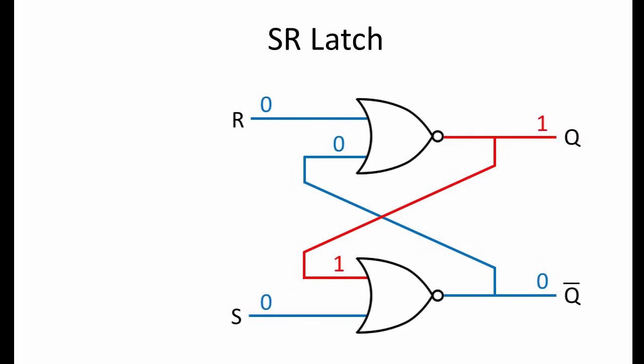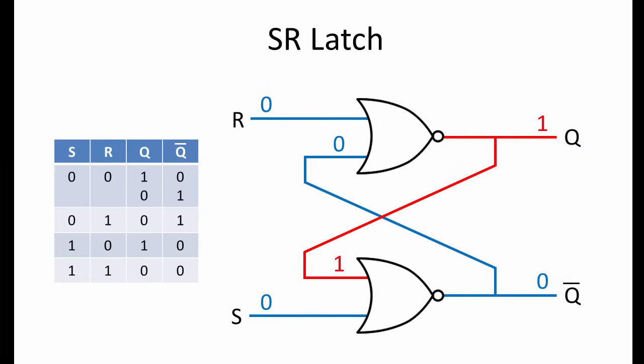This gives us an unusual-looking truth table. When both S and R are set to 0, Q may be 1 or it may be 0, depending on the previous state of the circuit.